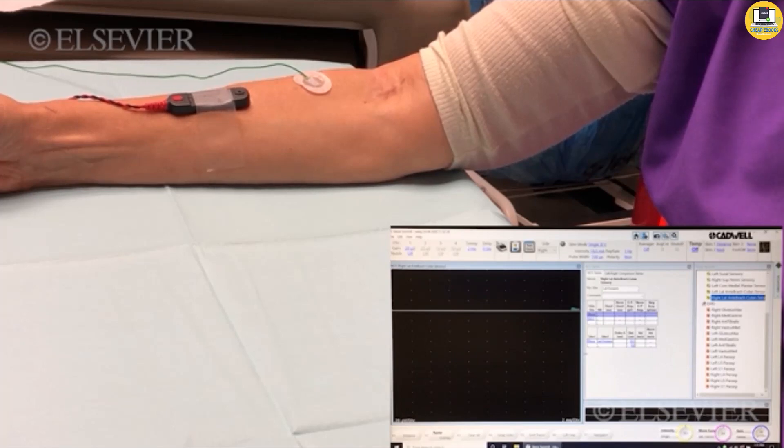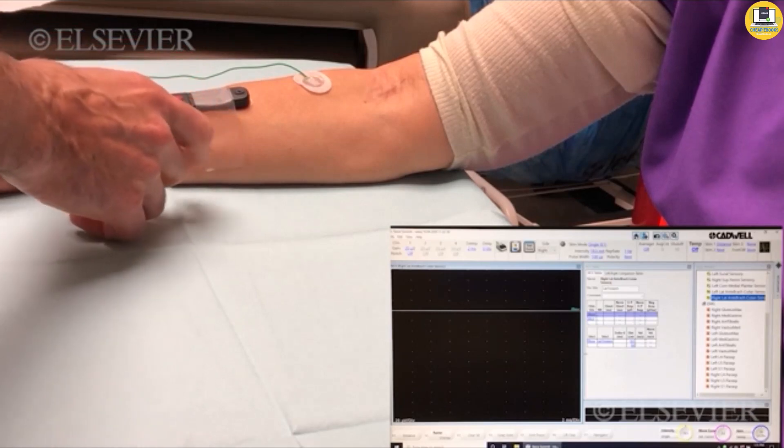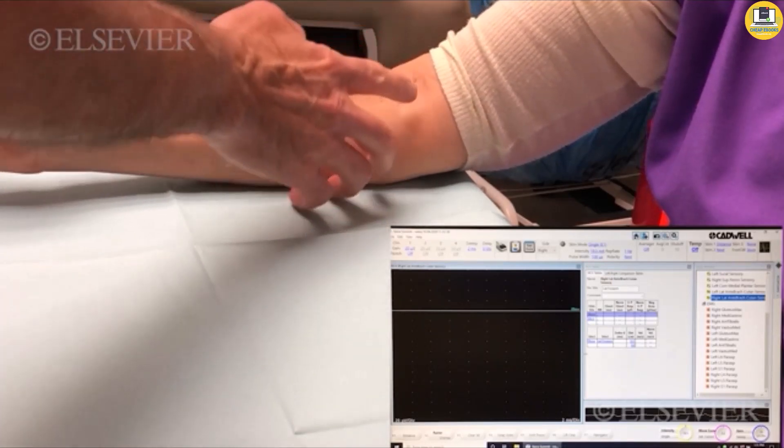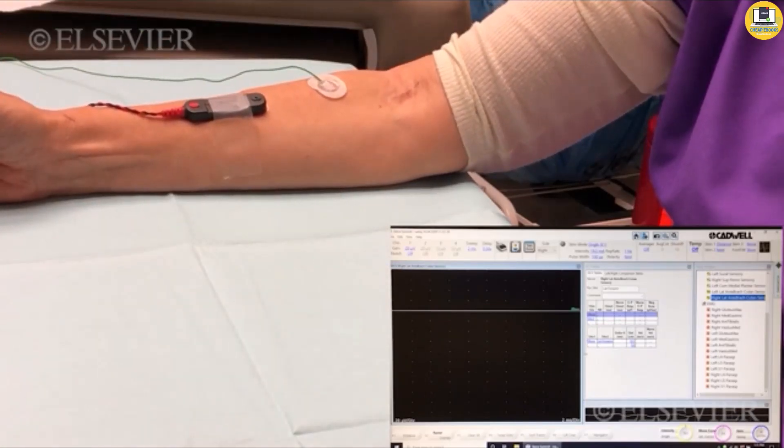These studies are performed with an active electrode about halfway between the radial styloid and the elbow, just lateral to the biceps tendon. Sensory settings are utilized.